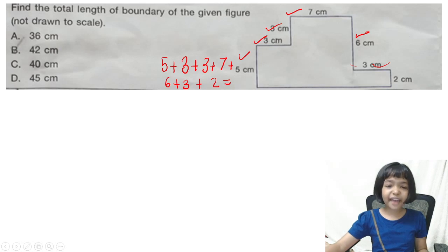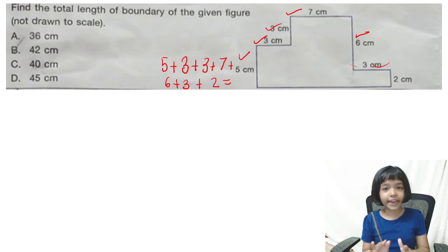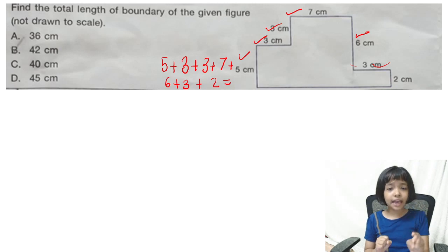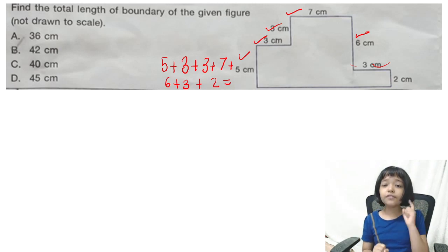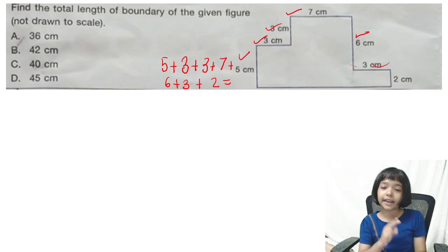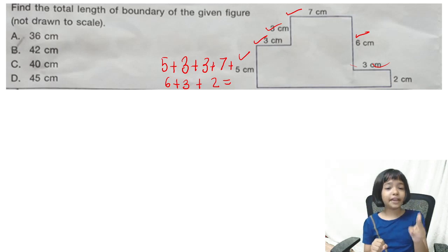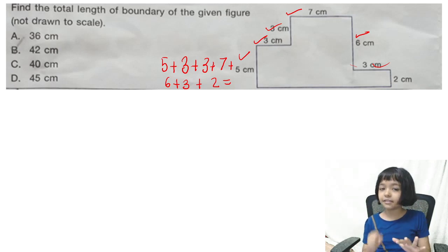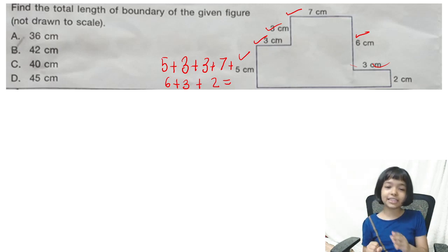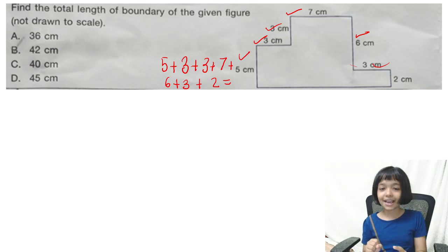So, now: 5 plus 3 equals 8, plus 3 is 11, plus 7 is 18, plus 6 is 24, plus 3 is 27, plus 2 is 29.